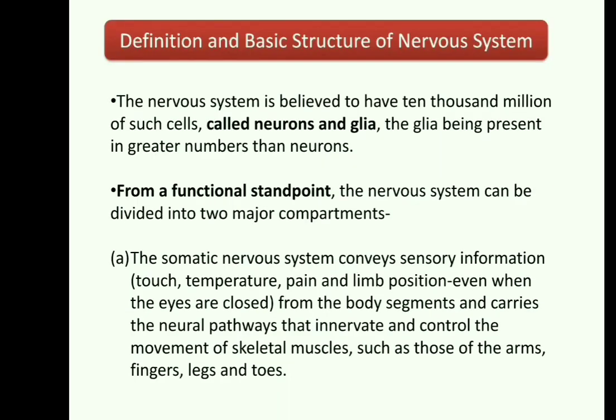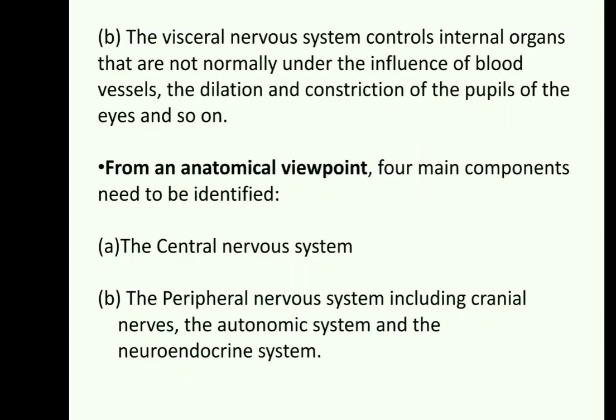In the somatic nervous system, it basically deals with sensory information like touch, temperature, pain, limb position, and different types of pathways whereby control and movement of skeletal muscles take place. In the case of the visceral nervous system, it basically controls the internal organs — such as dilation and constriction of the pupils of the eye — which are not normally under voluntary influence. These are the functional standpoints regarding the division of the nervous system.